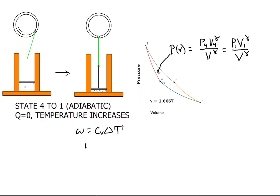So here, work is going to be 3 halves R. Remember it's a monatomic gas, that's Cv. And it's going to be times T1 minus T4.